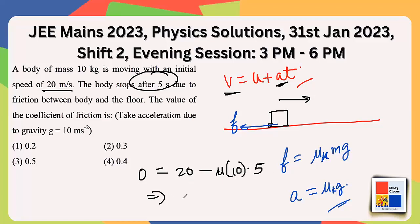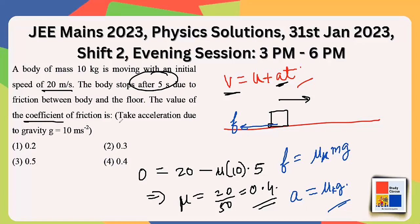Solving this gives mu = 20 divided by 50, which is 0.4. So the coefficient of kinetic friction is 0.4. This is a simple, straightforward formula-based question.